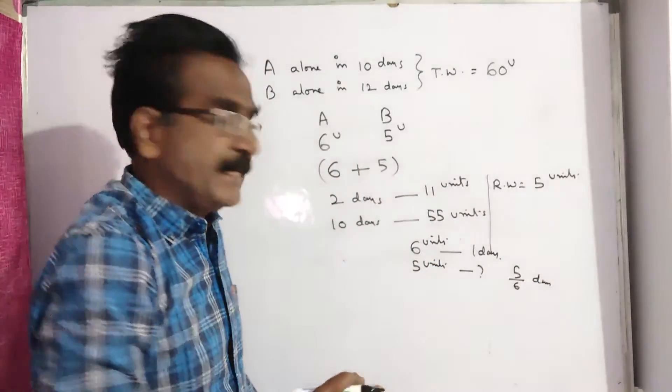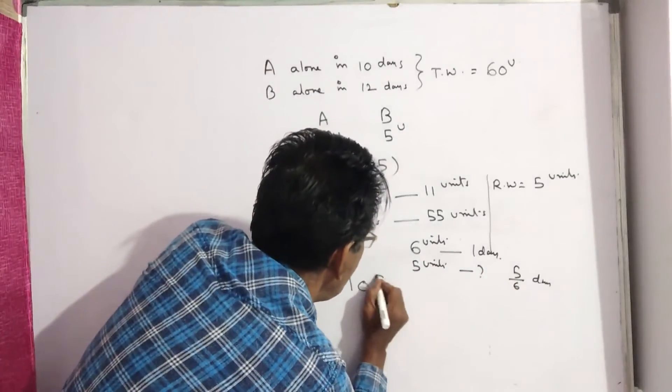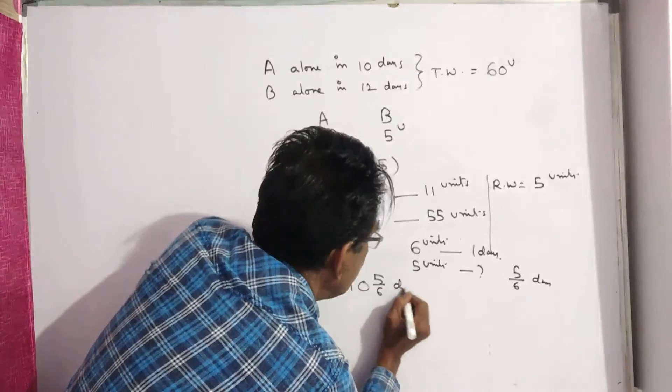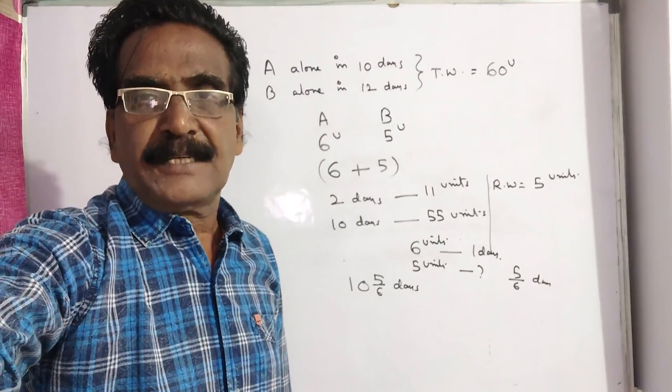So the total time taken is 10 days plus 5 by 6, that is 10 and 5/6 days to complete the total work. Okay friends, thank you. Have a nice day.